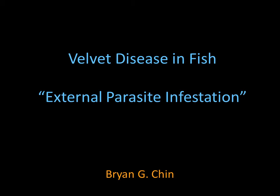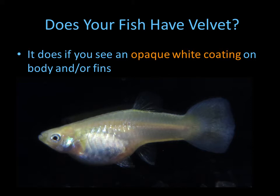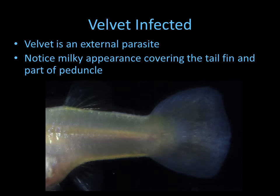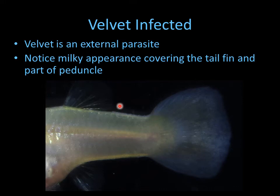Hello, this is Brian Chen and in this presentation we're going to talk about velvet disease. Velvet disease is called velvet because it gives this kind of velvety coating, and you can see it here in the tail. It's kind of a milky color and it's part of the tail. It's also starting to infect part of the peduncle area. Taking a closer look, you can see how it's affecting the peduncle — the healthy area versus where you're starting to get this light coating of parasites.